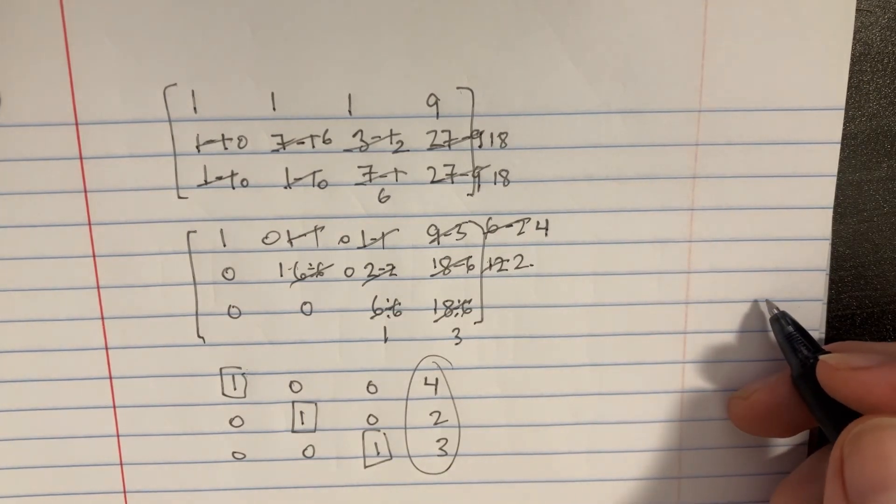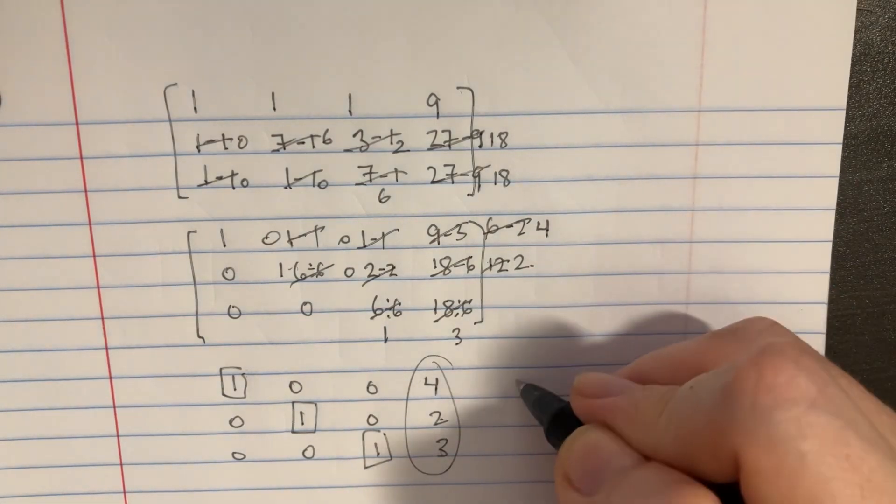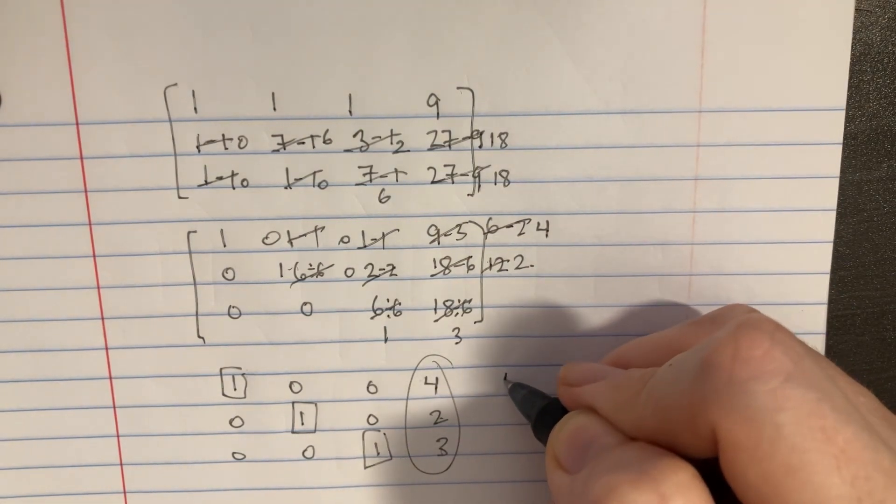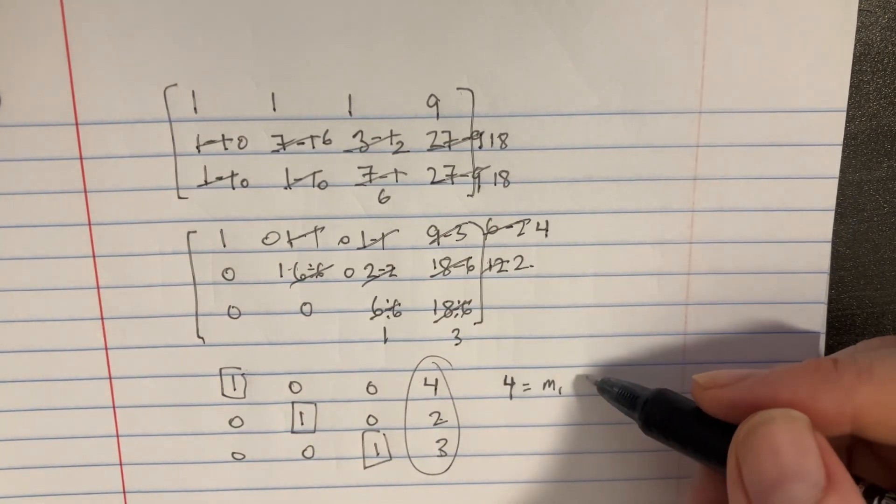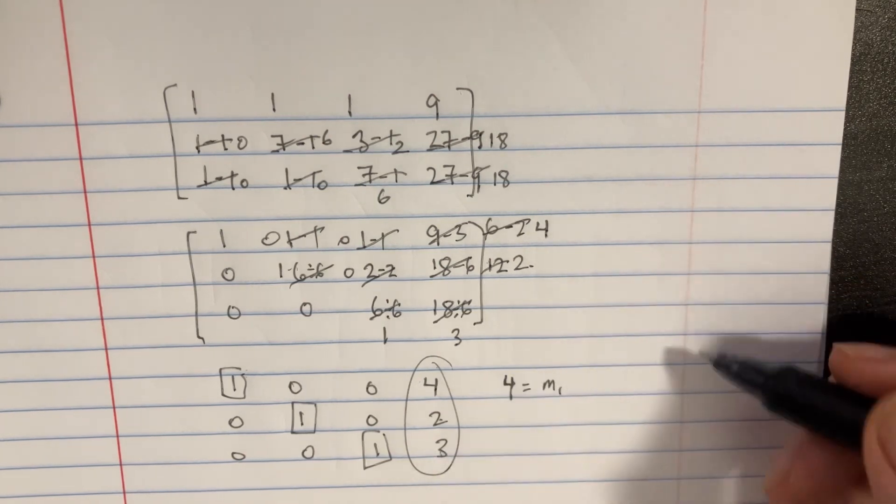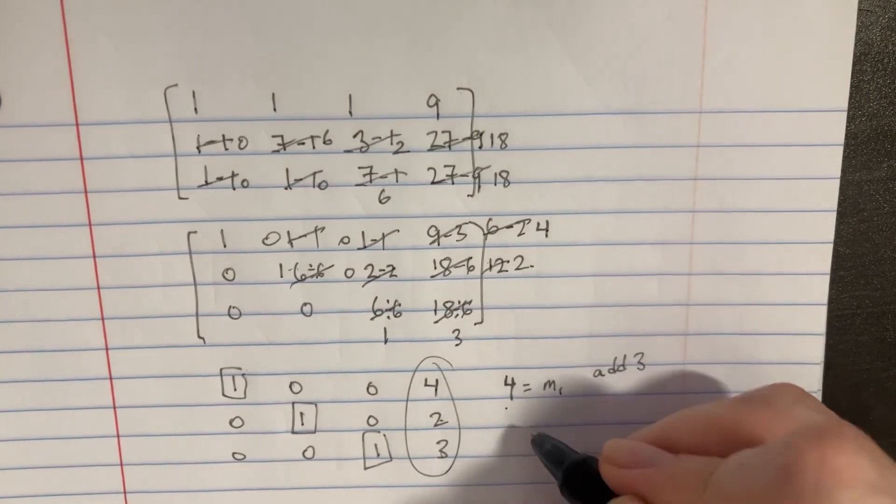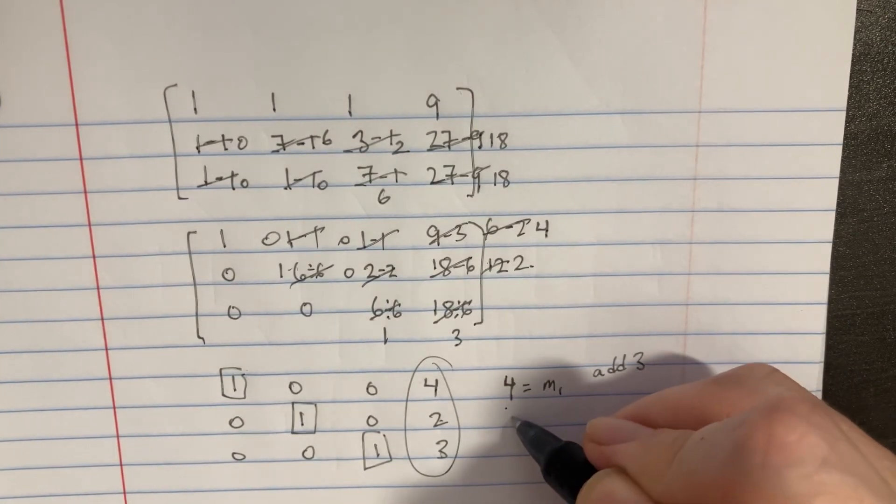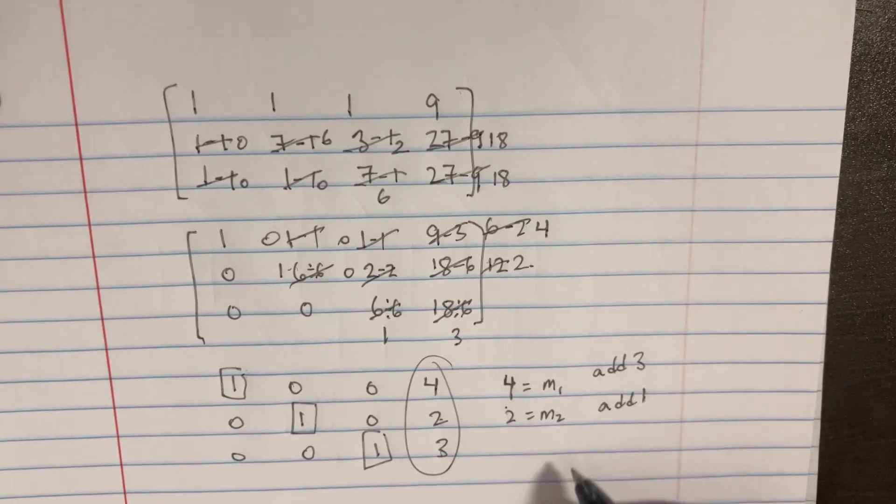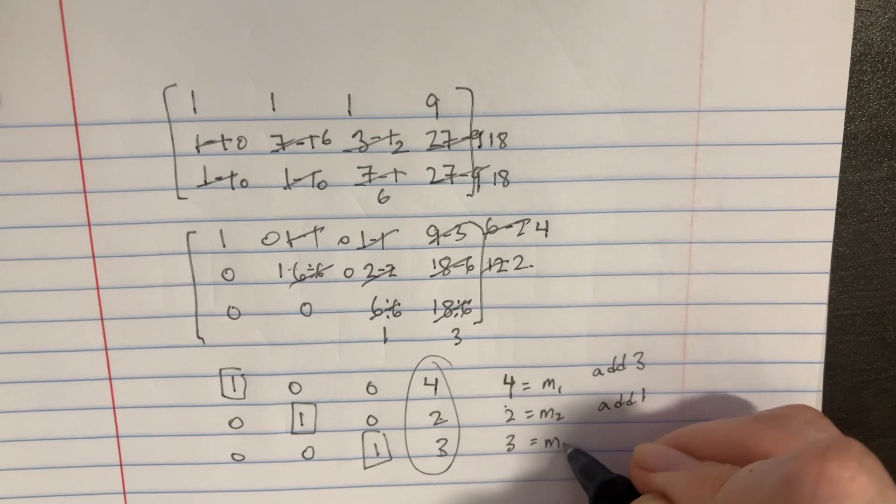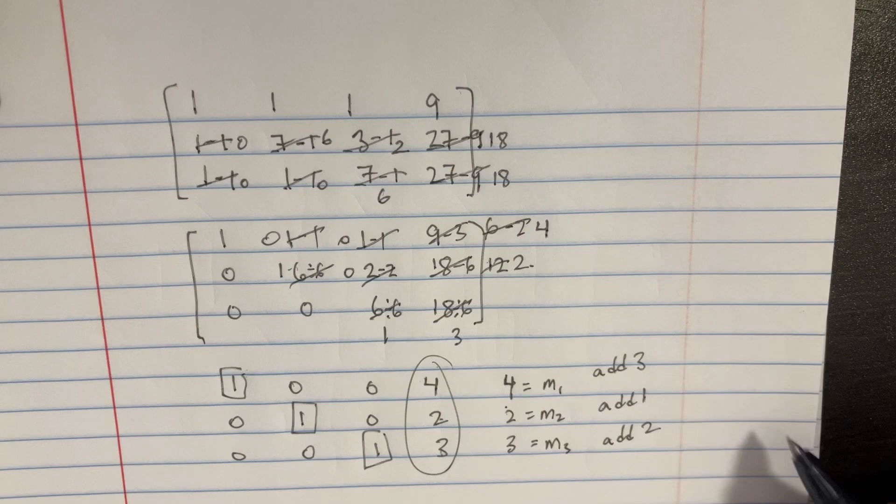But keeping in mind that this is supposed to be equal to those masses, right? So 4 is equal to m1. But the thing is, remember that we already had a gram. We're trying to add how much. We actually just added 3. So we added 3 because we had a gram already, you see? And in the second one, if 2 equals m2, we actually just added 1 in order to get that. And over here in this section, 3 is m3, but we added 2 in order to get that. So we added a total of 6 over here.